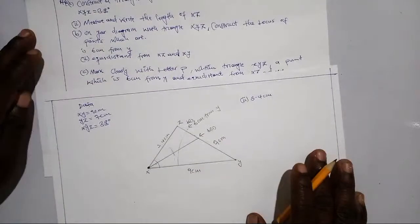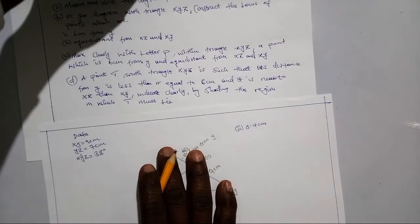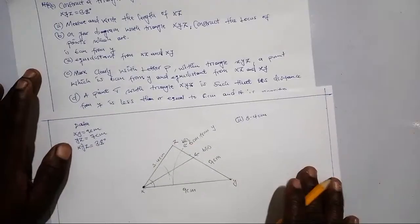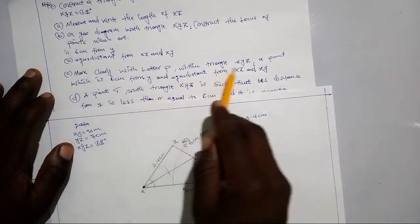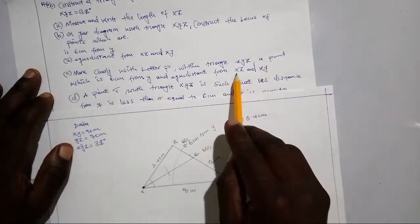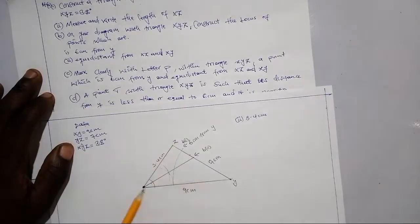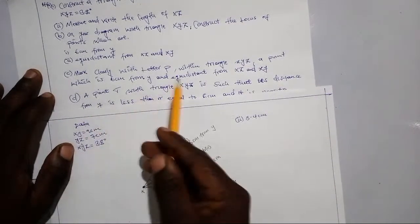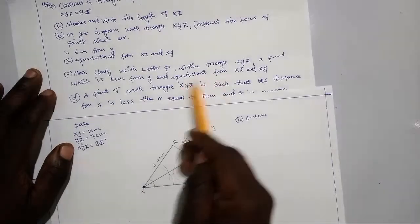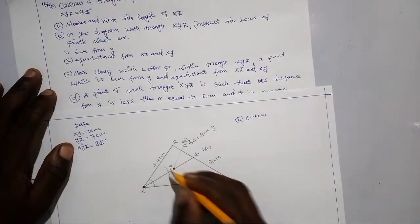Part (b2) is done. For part (c), we are told to mark clearly point P within triangle XYZ — a point which is 6 centimeters from Y and equidistant from XZ and XY. The equidistant locus is the bisector line. The point 6 centimeters from Y is the arc. Where they intersect, that is point P — P lies here.